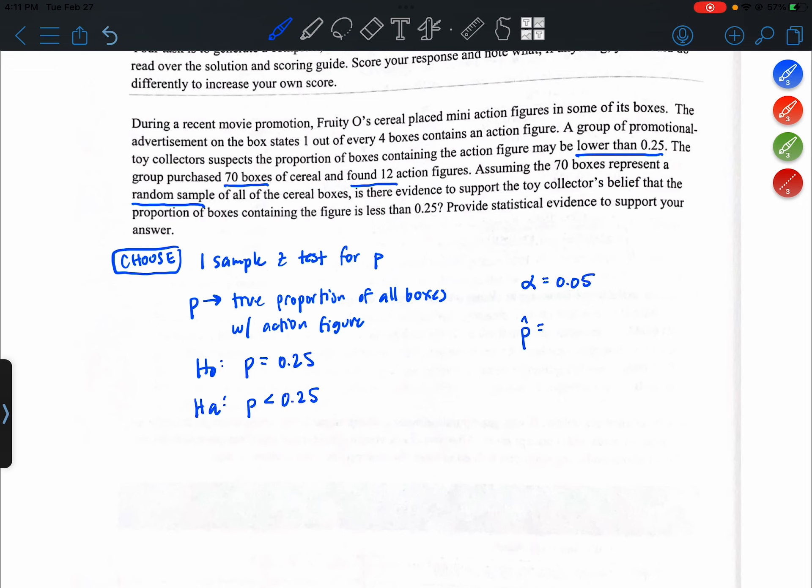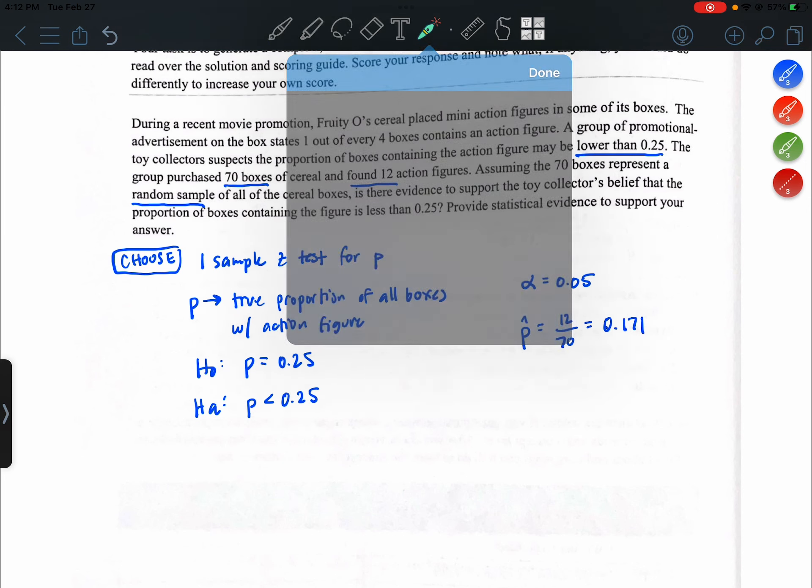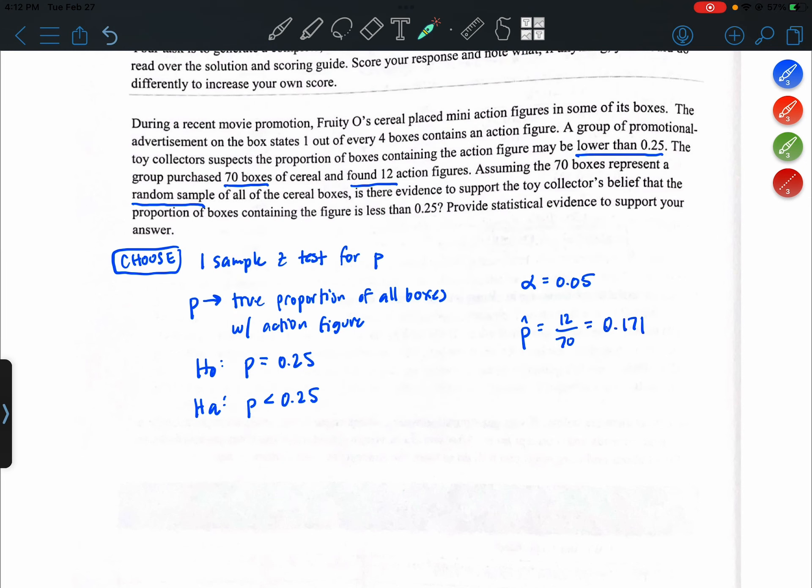And then now our statistic. So 12 out of the 70 boxes in the sample had an action figure. And that is 0.171. So right now we have some evidence for the alternative because 0.171 is technically speaking less than 25%. But we don't yet know whether it is statistically significant or not.